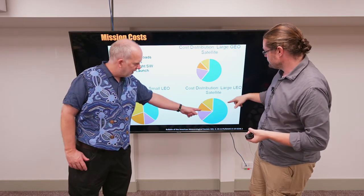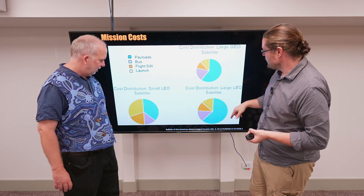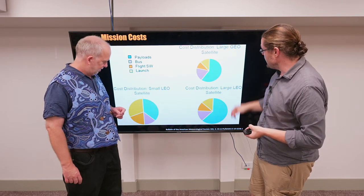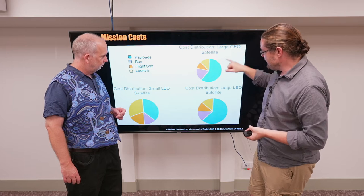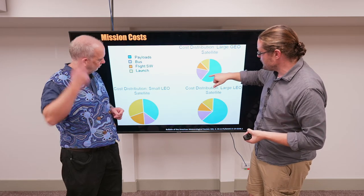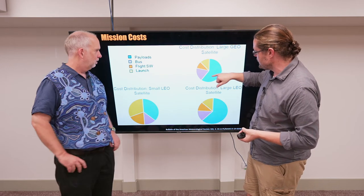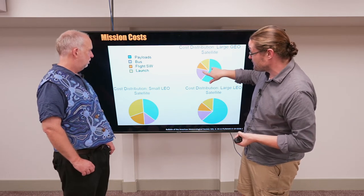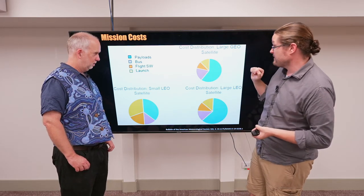Okay, so here's a low earth orbit, but now it's a large one rather than a small one. And now the cost of the payload is dominating. That's right. And if we go to geo, geosynchronous orbit, in fact, we start to lose a bit of the cost of the payload and we're starting to increase a bit of, surprisingly, the bus and a bit of the launch.